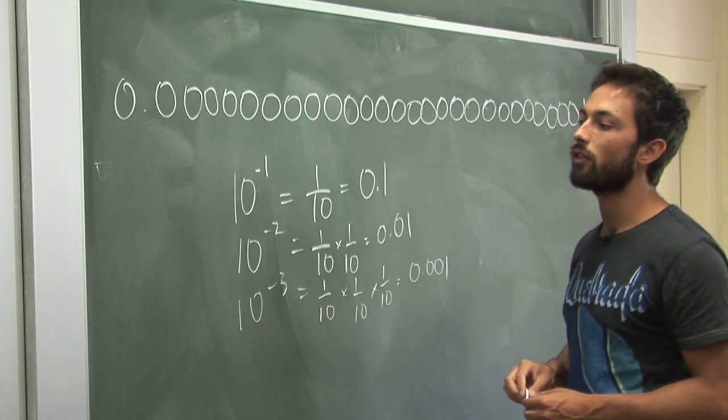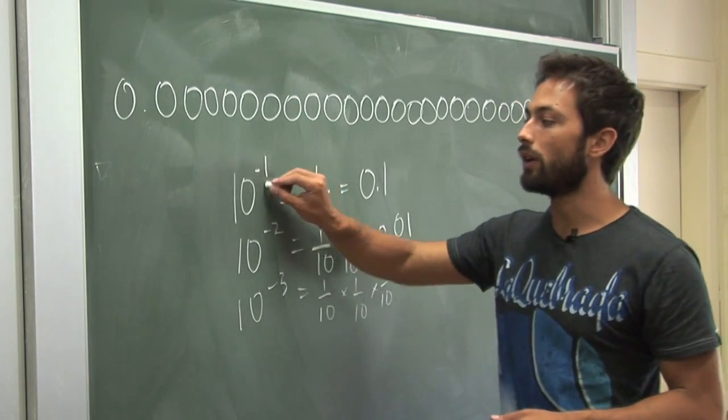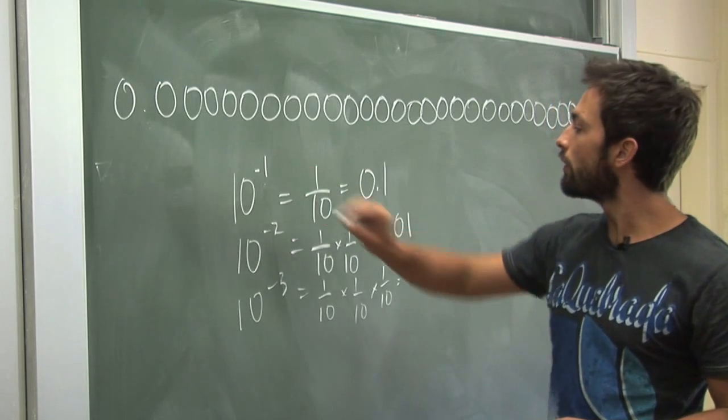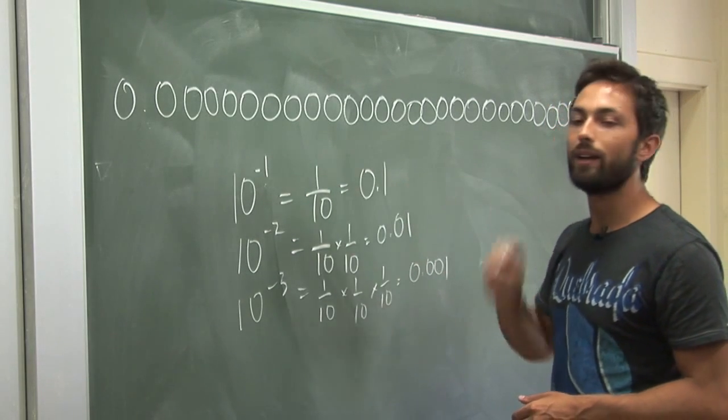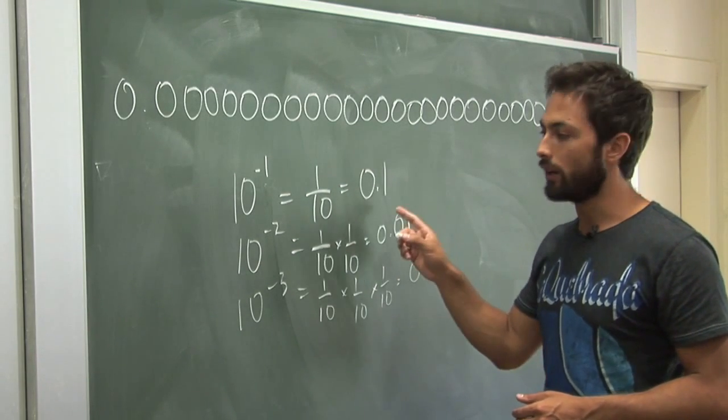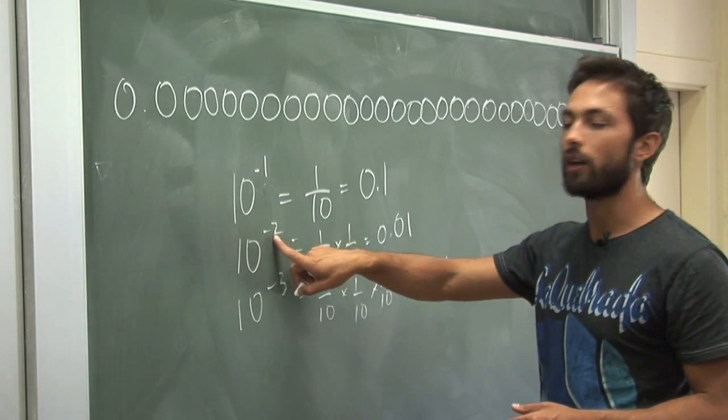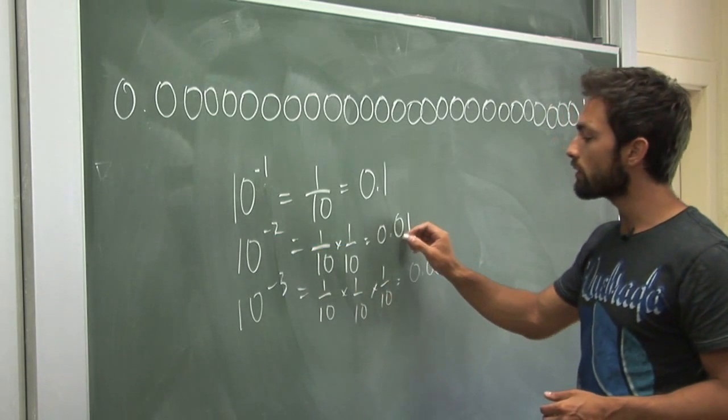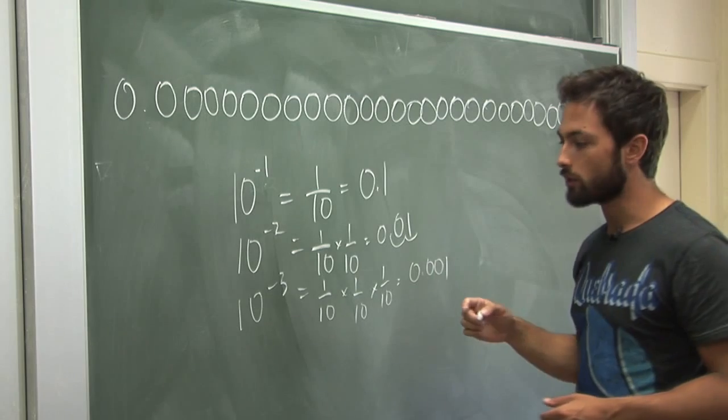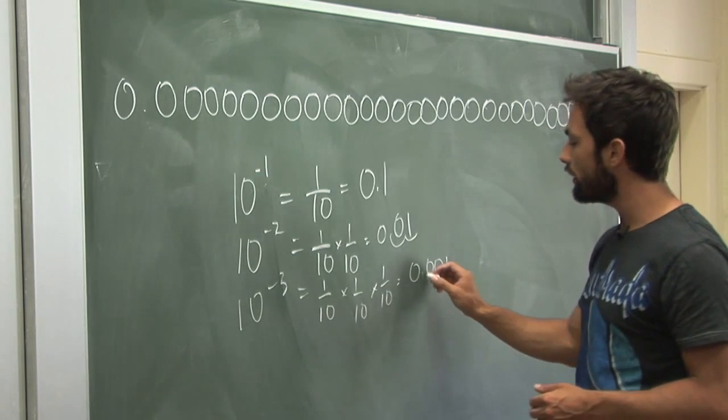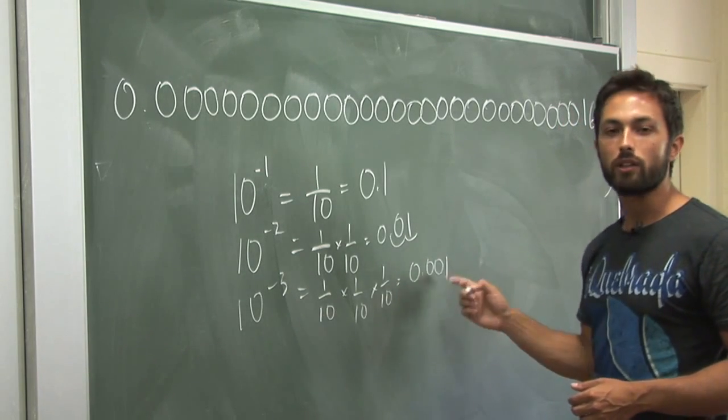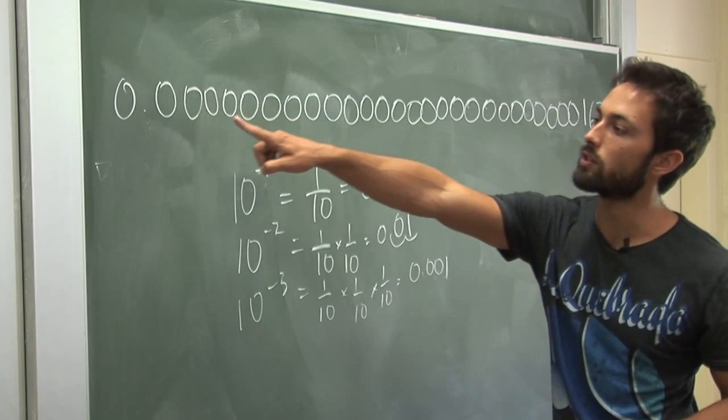So again, you see a pattern developing. The exponent here tells you the number of places to the right of the decimal that the 1 is. So in this case, 10 to the minus 2, the 1 is 2 places to the right of the decimal. Here, 10 to the minus 3, the 1 is 3 places to the right of the decimal.